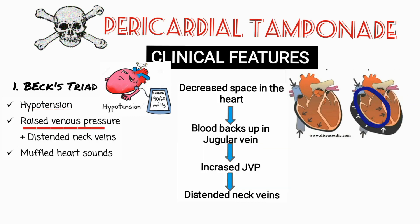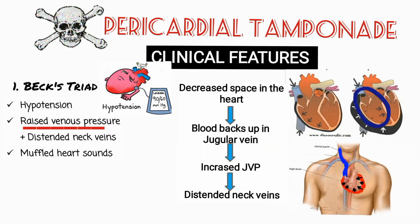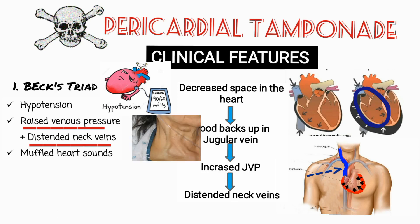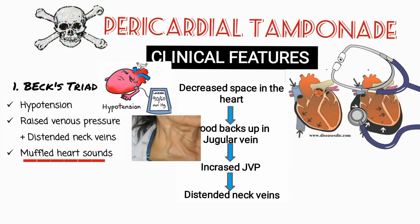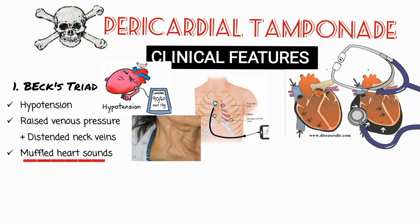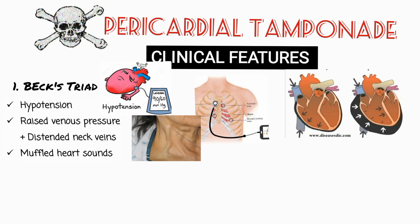On the right side, due to decreased space, the blood starts to back up in the veins, most notably the jugular vein. This results in increased jugular venous pressure, which is indicated by distended neck veins. On auscultation you have distant muffled heart sounds, which is due to the fluid acting as a barrier between the heart and the stethoscope. These three signs are the classical features of pericardial tamponade.